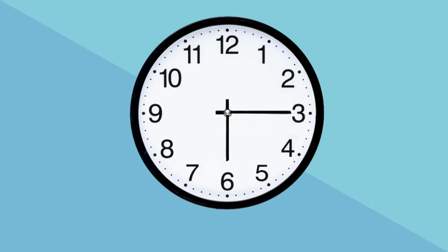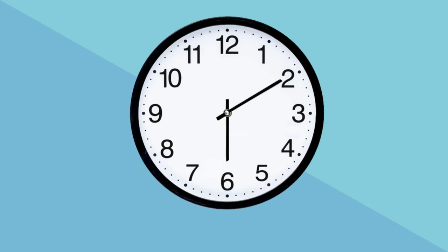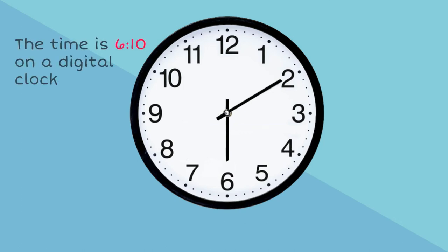Can you count in 5s as we go around the clock? If the long hand is pointing to the 2, what time is it? Remember to count by 5s. So from 12 to 1 is 5 minutes, and from 12 to 2 that's 10 minutes. And the short hand is pointing to 6, which means it's 6 o'clock. Putting those together, the time will be 6:10 on a digital clock, or 10 minutes past 6 on the analogue clock.